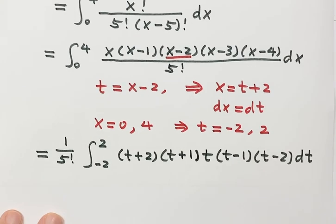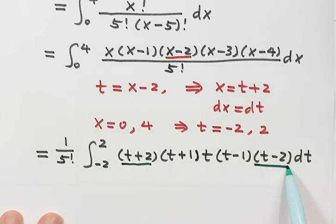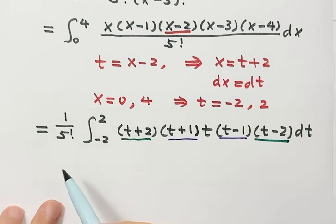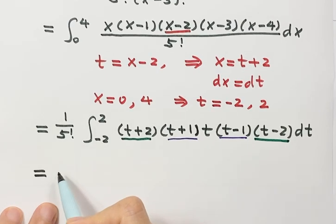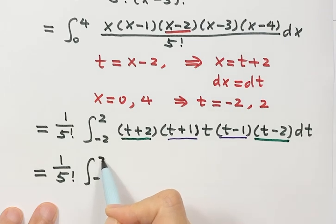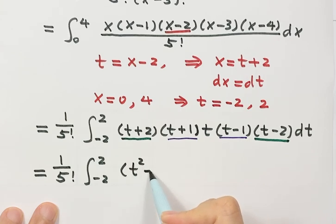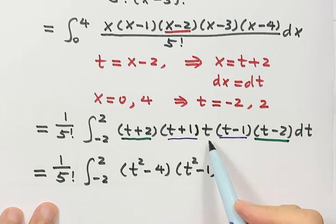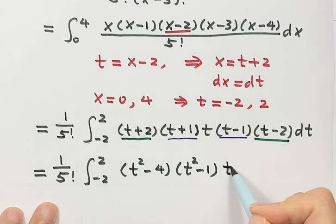Next we have to combine these two together. These two combine together, that's t squared minus 4. Then these two combine together, that is t squared minus 1. Then put the t here and dt.